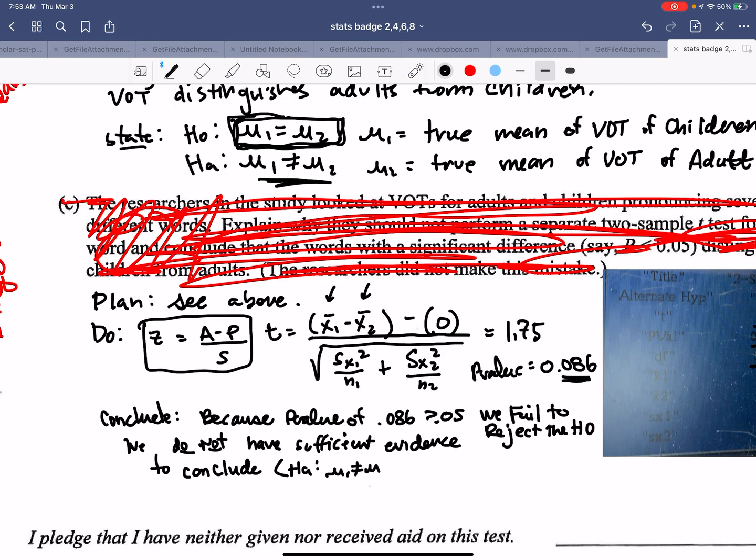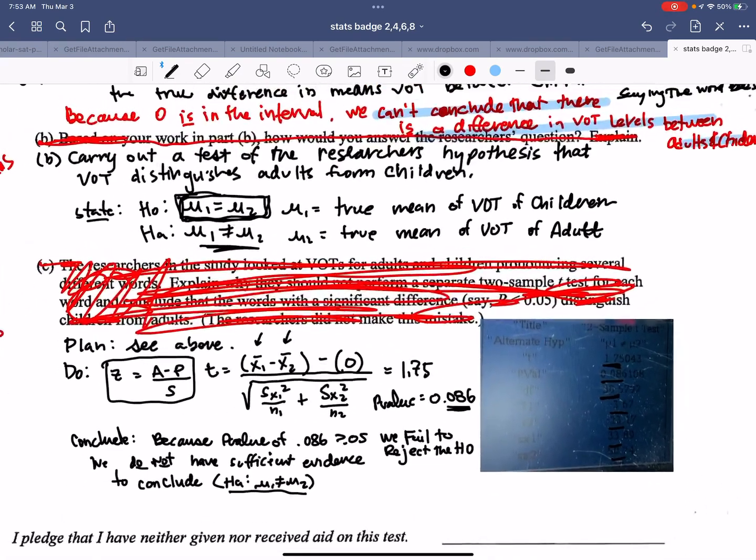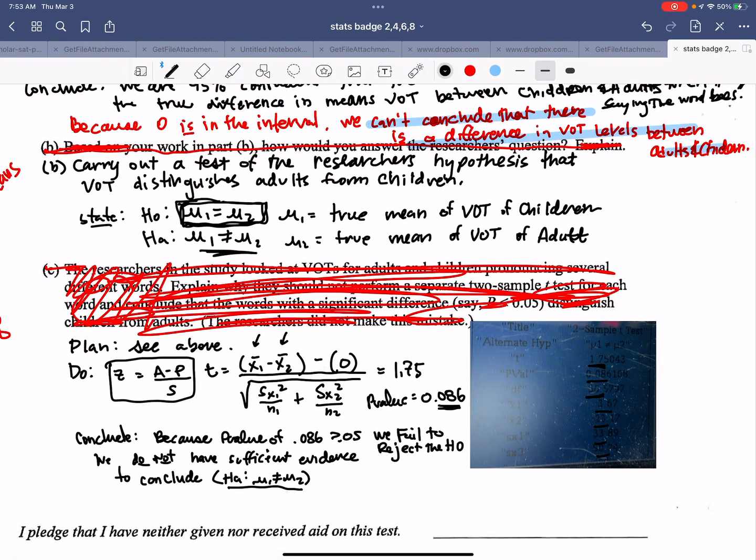Students want to stop there. And if you do, you can't get your badge because you have to say what this means in words. So if we think about what it means in words, it means the researcher wanted to test out if VOT can be distinguished from adults and children. And in fact, they can't. So we cannot conclude that VOTs distinguishes adults from children. Essentially, we're saying we cannot say that they're different. Thanks for joining us, guys. Good luck. Happy studying.